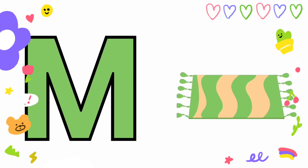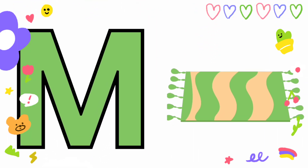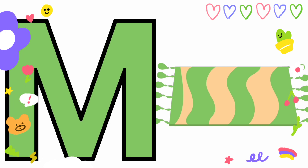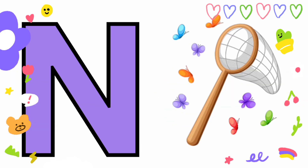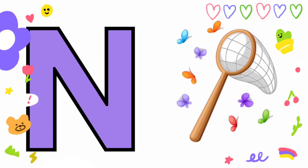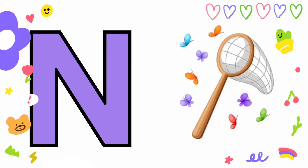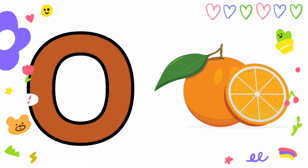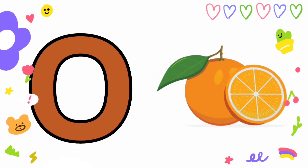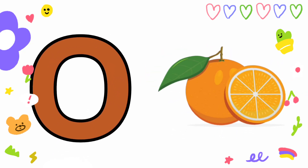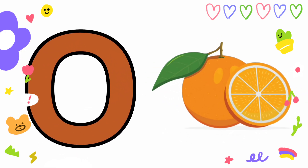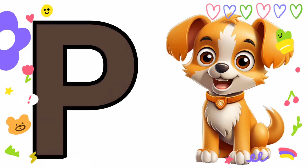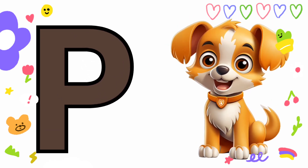M is for Mat, M-M-Mat. N is for Net, N-N-Net. O is for Orange, O-O-Orange. P is for Pet, P-P-Pet.